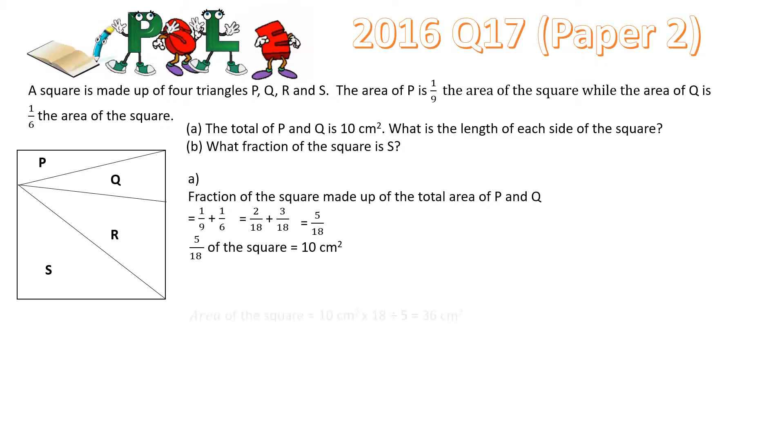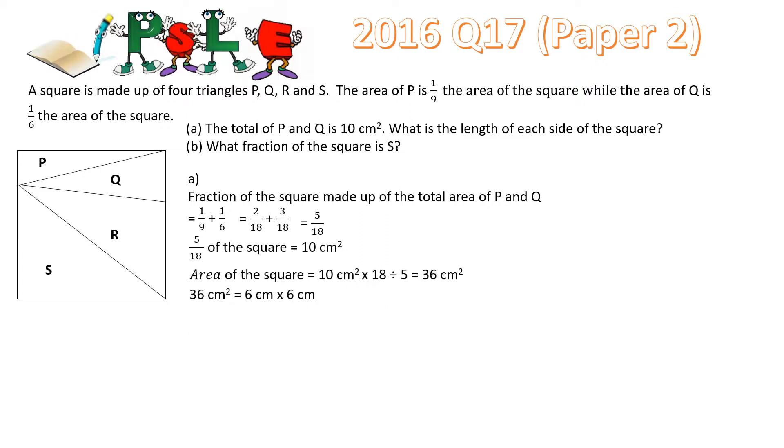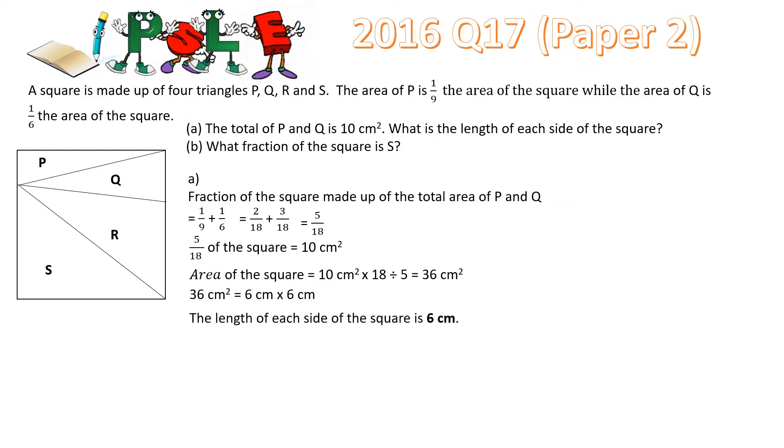Therefore 5 over 18 of the figure is 10 cm square. Then to find the area of the square is 18 times 10/5 and that is 36 cm square. The length of each side of the square is 6 cm.